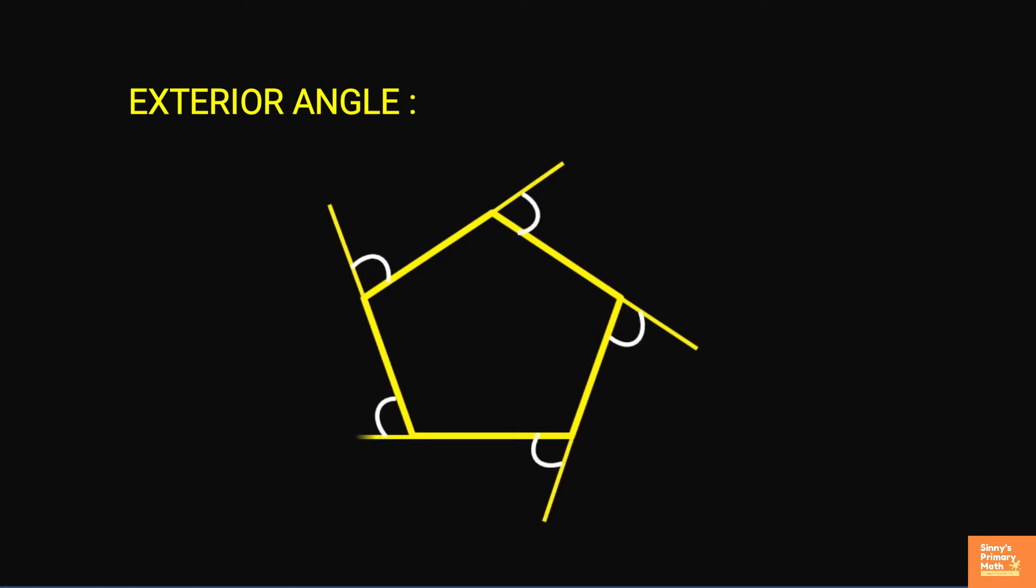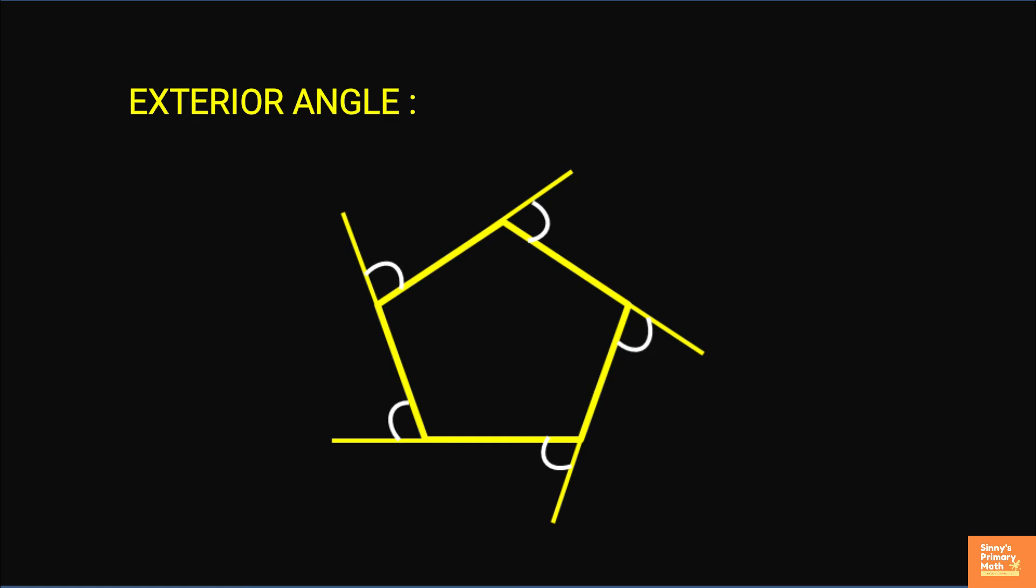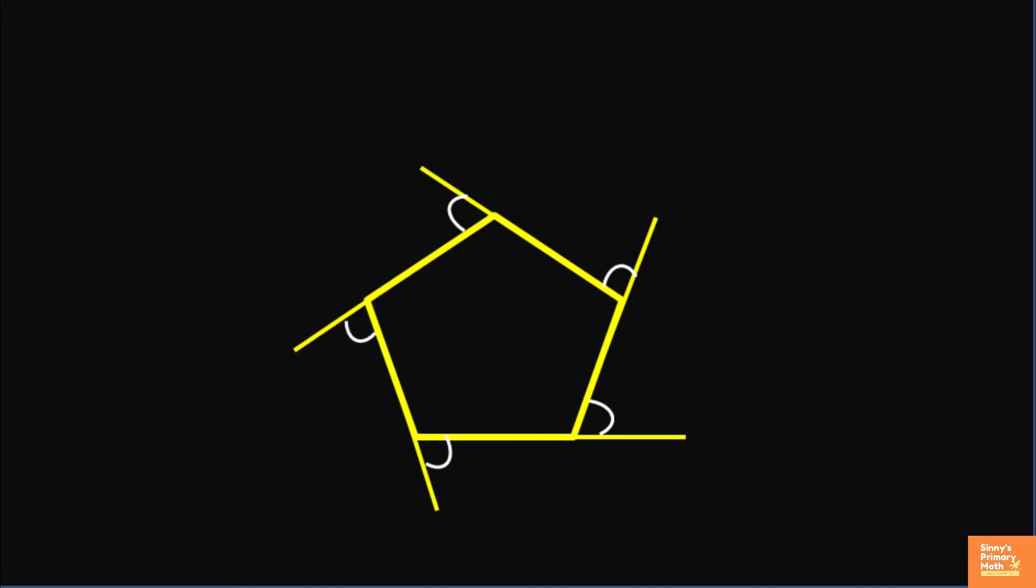The measure of the exterior angles at a vertex is unaffected by which side is extended.